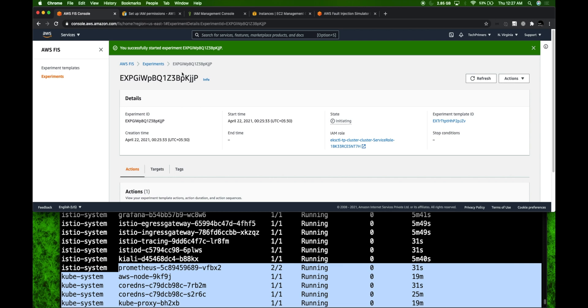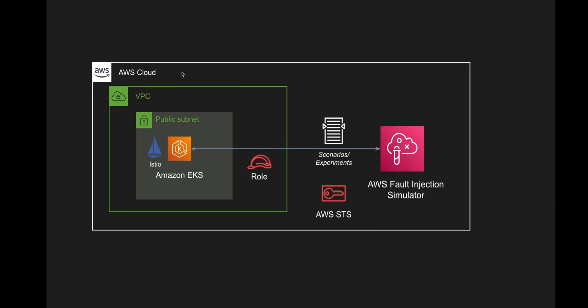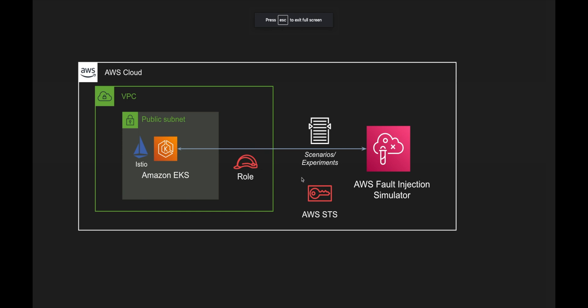AWS FIS is one of the newest services — do try it out. There are different options for running these experiments, including database latency, restarts, and failovers. Unlike Gremlin, where we had to run agents within our containers to shut down instances, FIS does that with just the roles we provide here. We provide the role and the STS access, and FIS will automatically run these experiments on any of the AWS services you have connected.